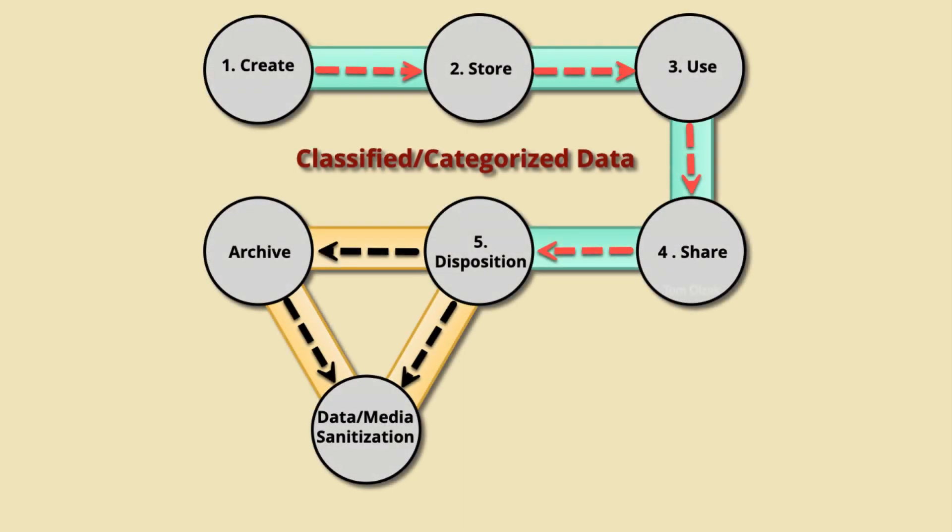Throughout this life cycle, the data owner is responsible for data protection. The organization should select a data life cycle management approach that makes the most sense for its operational environment. Implementing and managing proper safeguards is a continuous process that must be integrated into the overall risk management process and any change management procedures. If you have questions, please ask, and if this information was helpful, please subscribe. Until next time — be careful what you click.